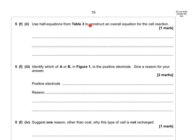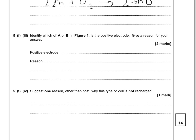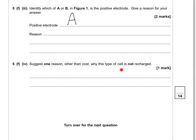Use the half equations from table 3 to construct an overall equation for the cell reaction: 2Zn + O₂ → 2ZnO. Identify which of A or B in figure 1 is the positive electrode — that's A, because the oxygen electrode potential is the most positive (or the zinc electrode potential is the more negative). Give one reason other than cost why this type of cell is not recharged: simply because the reaction cannot be reversed, or the reaction is irreversible.